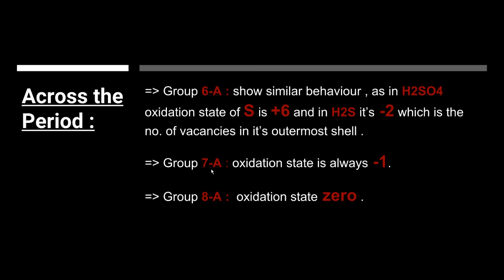For group 7A, which is the halogen family — fluorine, bromine, iodine, and astatine — the oxidation state is always minus 1. This is the number of vacancies in the outermost shell. For group 8A, which is the inert gases, the oxidation state is 0. It is also called the zero group. They show 0 oxidation state because there is no vacancy available in their outermost shell.